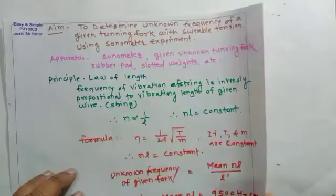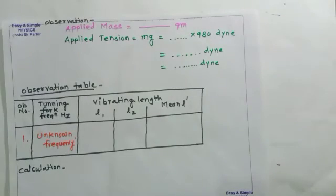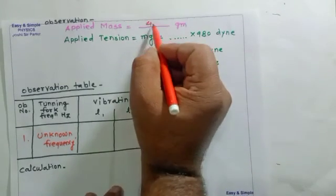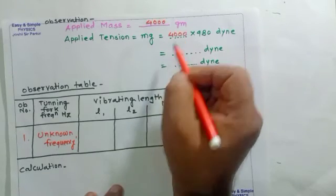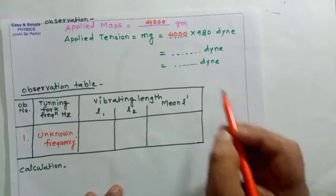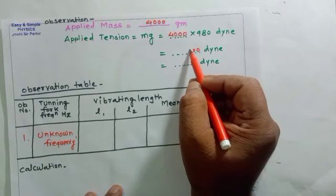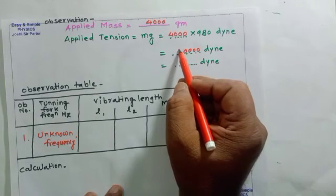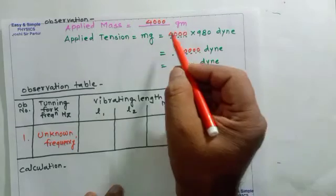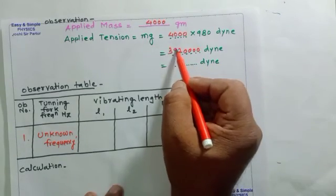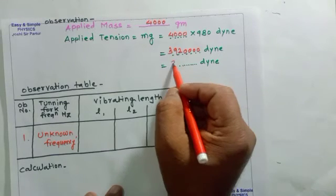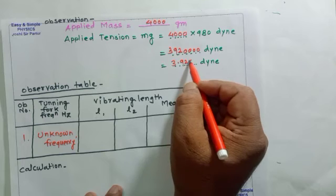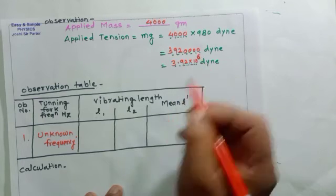See here, two knife edges. In the L dash, first applied mass, it will be 4000 gram. So 4000 multiplied by 980 dyne. Four zeros are there, eight four the 32, three will be remaining, four nine the 36, and becomes 39. So it will be 3.92 into 10 to the power 6 dyne.